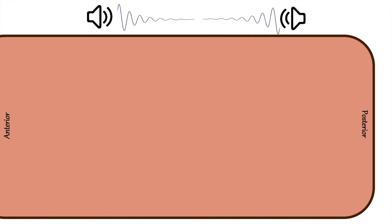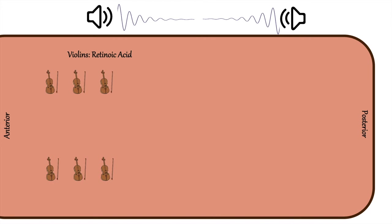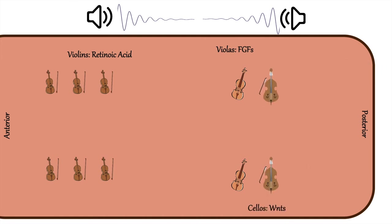First, the numerous transcription factors are various instruments in the orchestra. There are the violins, representing retinoic acid, which sit at the anterior or front side of the room. On the posterior end of the room, or the back of the room, sit the lower strings — such as the violas representing FGFs, cellos which are Wnts, or basses, which are BMPs. All of these help make up the pre-somitic mesoderm.